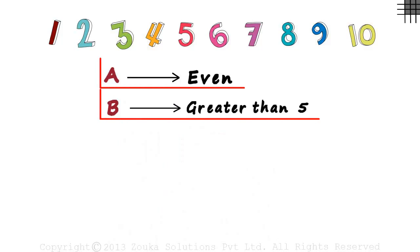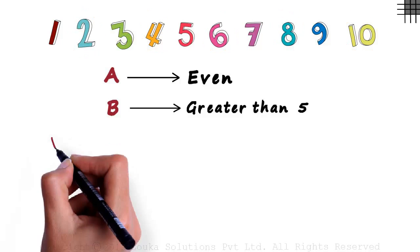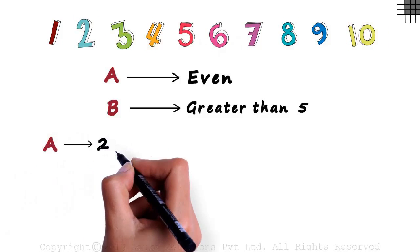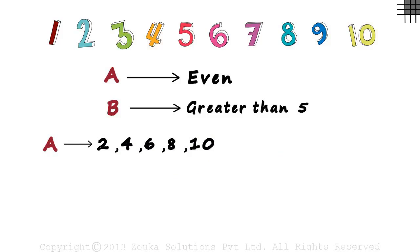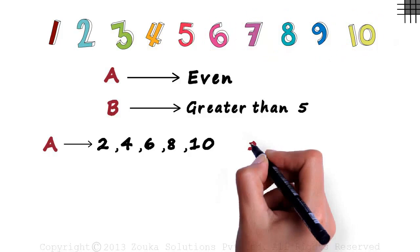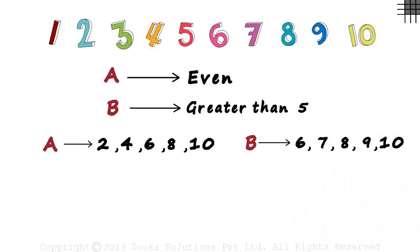Let's analyze the two events. Even numbers are multiples of two. There are five even numbers in this set: two, four, six, eight and ten. Let's write it next to A. And there are five numbers that are greater than five: six, seven, eight, nine and ten. So next to B, let's write six, seven, eight, nine and ten.